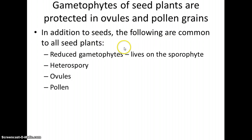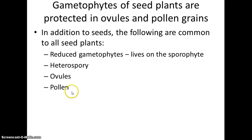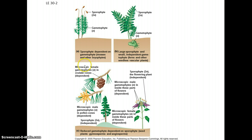All seed plants have a reduced gametophyte that lives on the sporophyte, as opposed to mosses where the sporophyte lived on the dominant gametophyte. They are heterosporous, as we just discussed. They have production of ovules and pollen grains: ovules are structures that contain the female gametophyte, and pollen grains are structures that contain the male gametophyte. In mosses the gametophyte is dominant; in ferns the dominant sporophyte grows off the gametophyte; and in gymnosperms and angiosperms, the dominant sporophyte has the gametophyte growing on it.